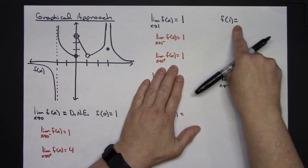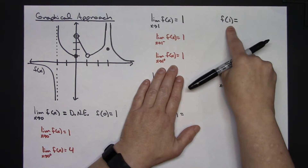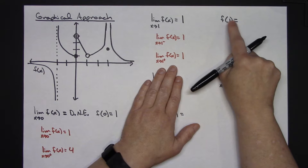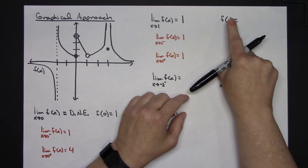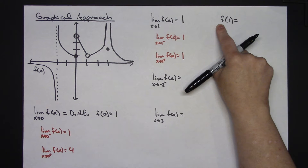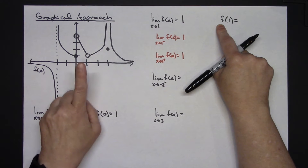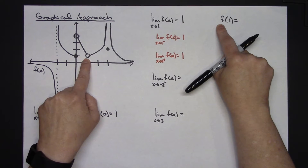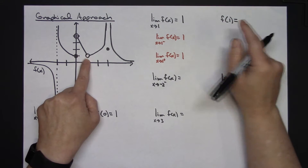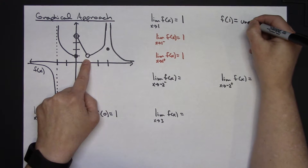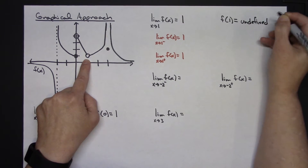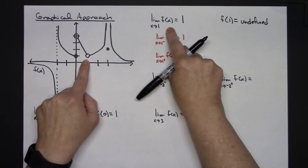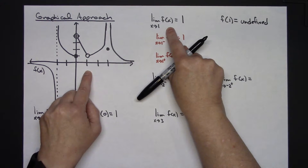Just to compare: the value of the function and the limit as x approaches that value have no connection. f of 1 means take 1 and plug it into the function to find the y-value. At x = 1 there's an open dot, so the function is undefined at 1. Yet the limit as x approaches 1 does have a value and equals 1 — these two things have no bearing on each other.